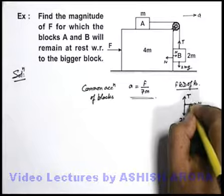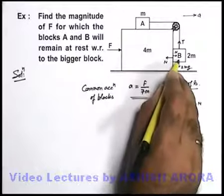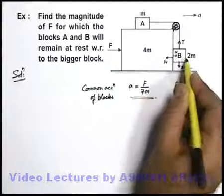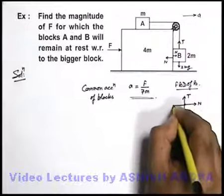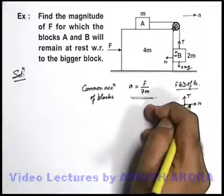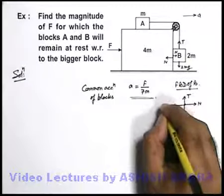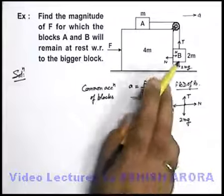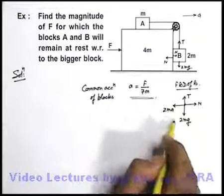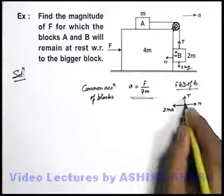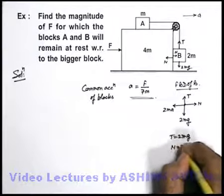If we consider this free body diagram with respect to the 4m block, or in the reference frame of 4m, block B will appear to be experiencing a pseudo force in the backward direction, because 4m is an accelerated reference frame. The pseudo force acts in the direction opposite to the acceleration of the reference frame, with value equal to mass of the body times acceleration of the reference frame, so it is 2ma. As block B appears to be at rest from 4m, all forces balance: T equals 2mg, and N equals 2ma.